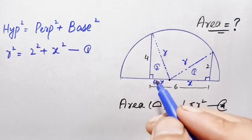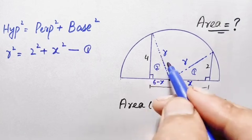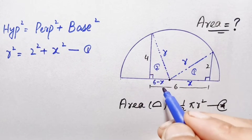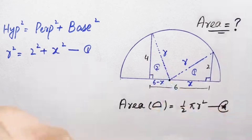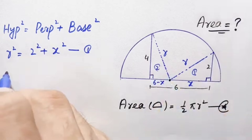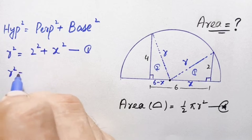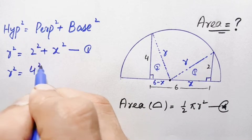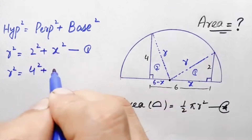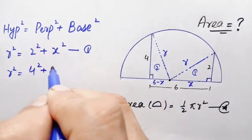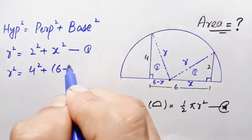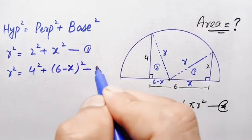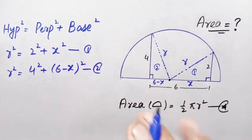Now for triangle number two, the hypotenuse is r, the perpendicular is 4, and the base is (6 − x). Applying the Pythagorean theorem gives r² = 4² + (6 − x)², which is r² = 16 + (6 − x)². Let us call this equation number two.